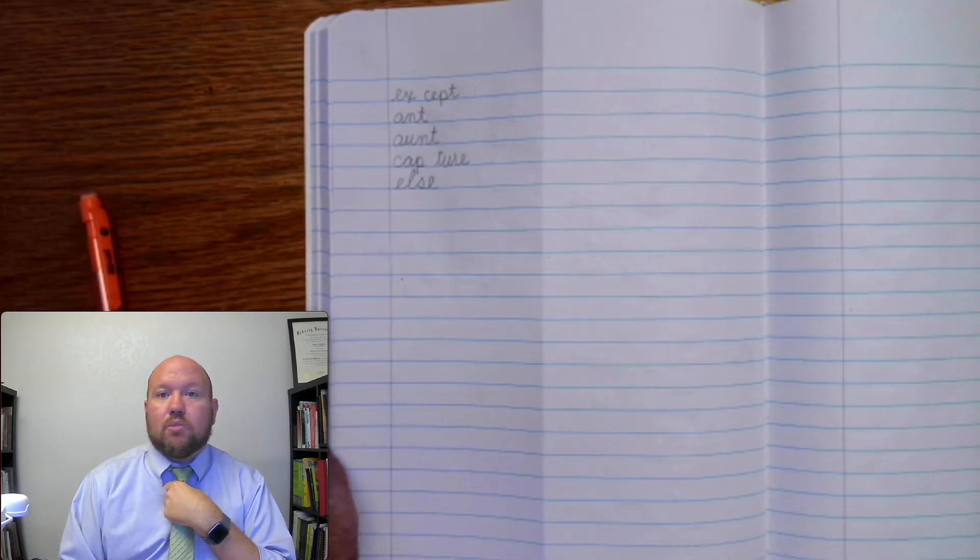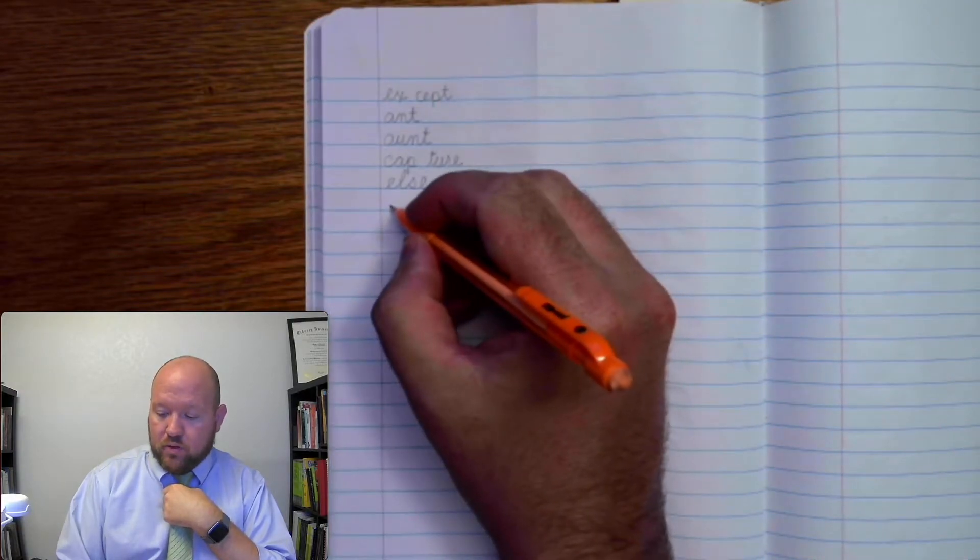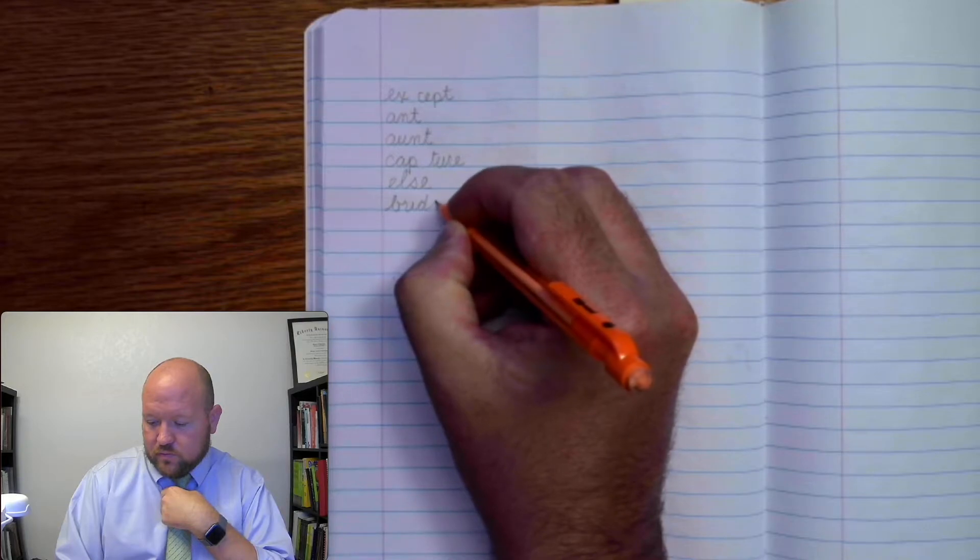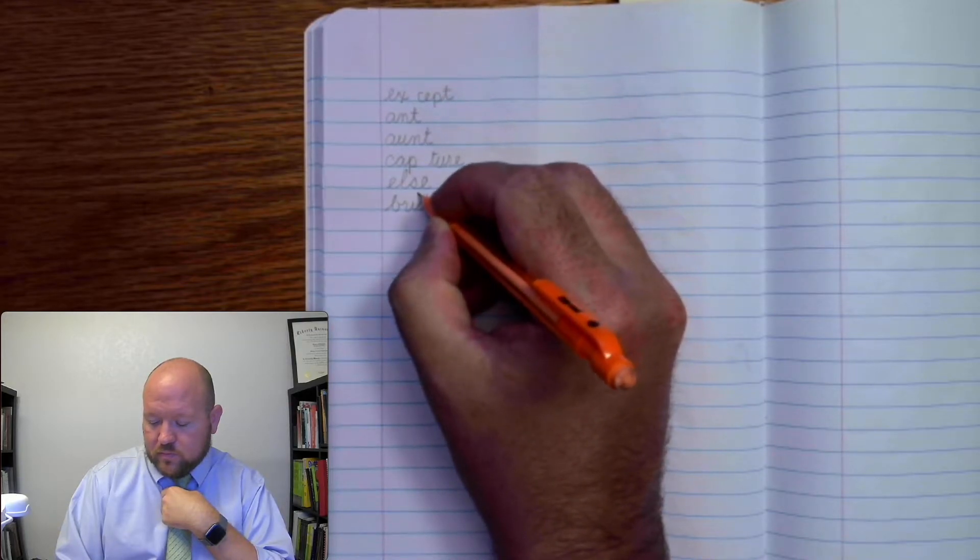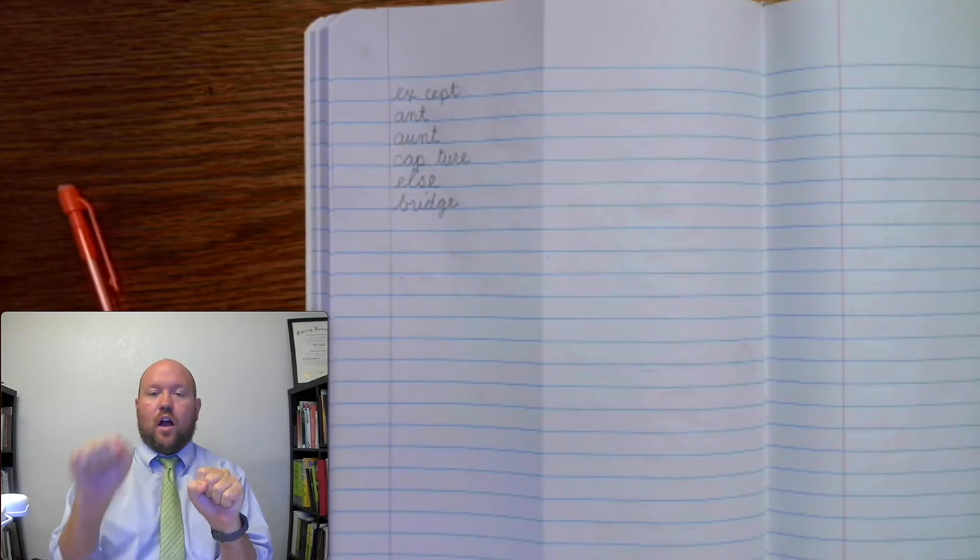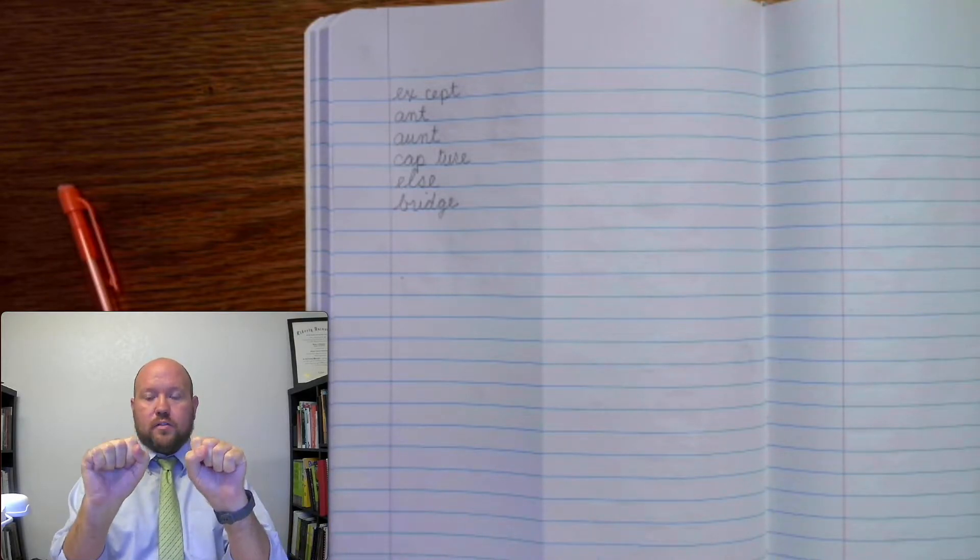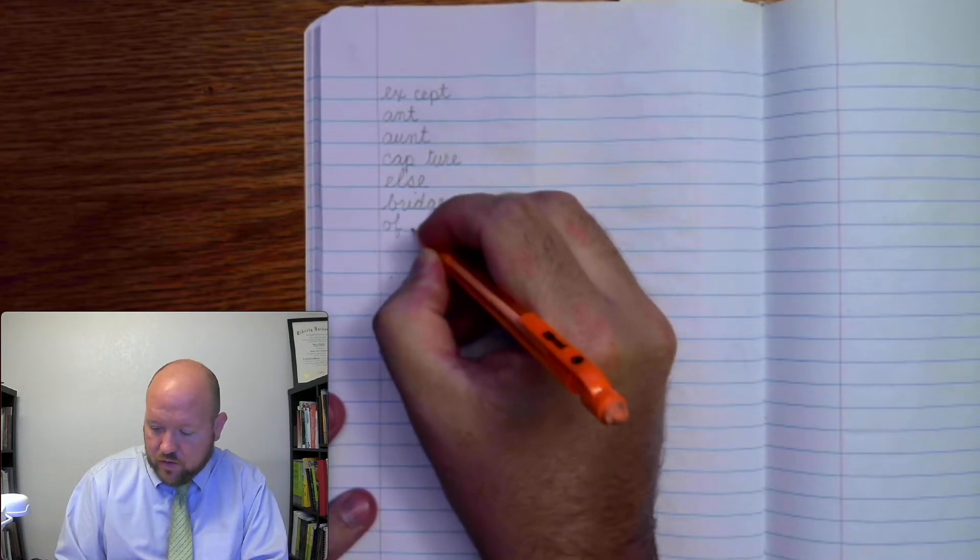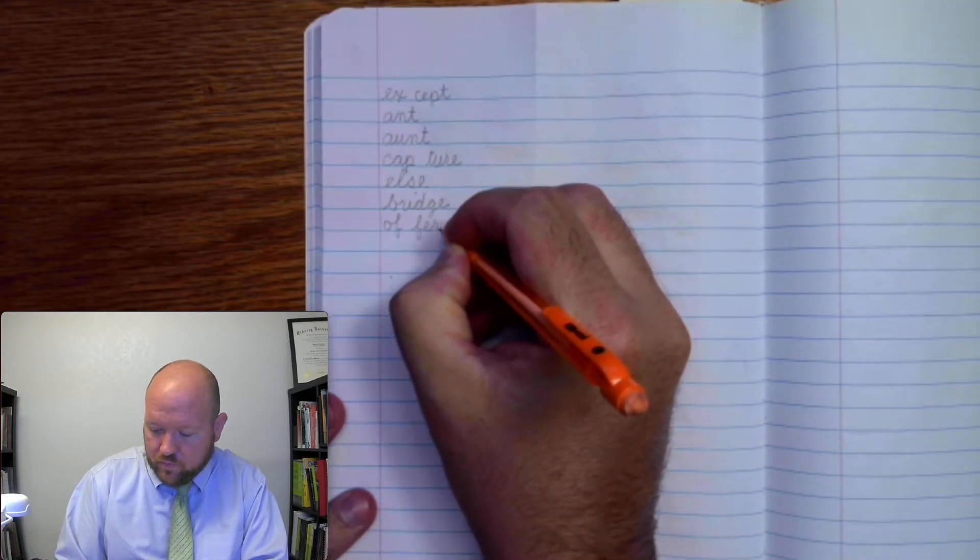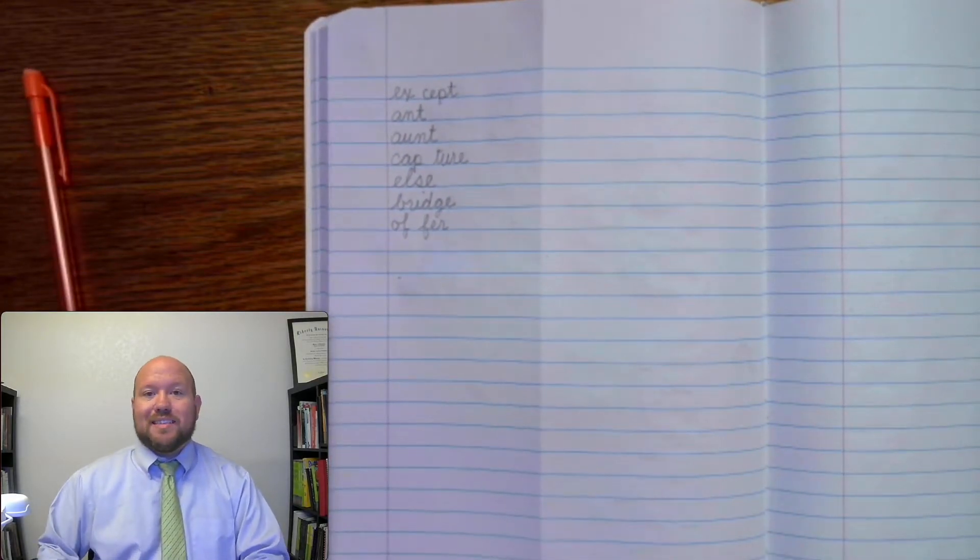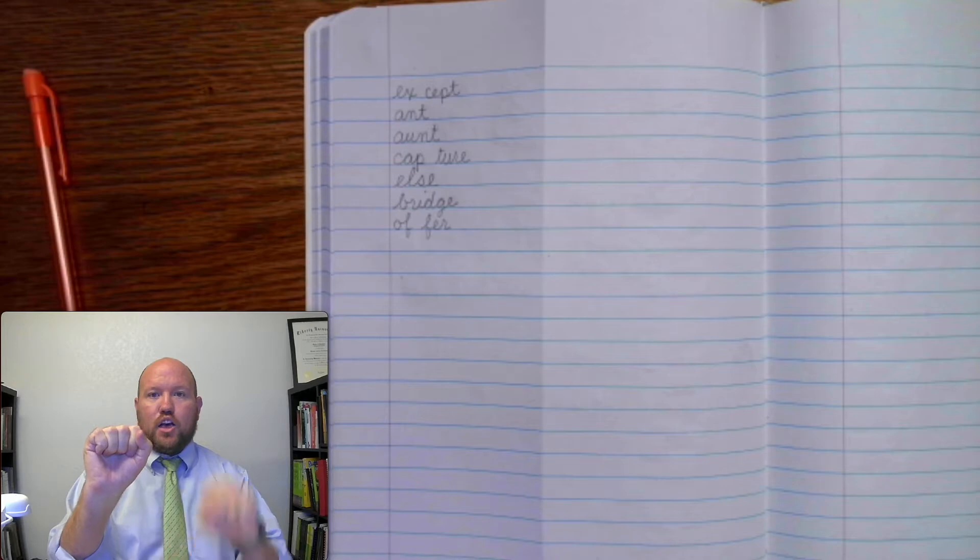Next word, one syllable, BRIDGE. BRIDGE. Next one, two syllables, OFFER. OFF-FUR. OFF-FUR. Next one, two syllables, CENTER. CEN-TER.